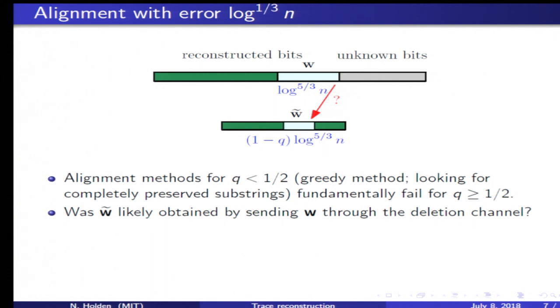In our work, we introduce a completely new alignment method. The alignment method is based on a test. Our test takes two strings, W tilde and W, as input, and it says whether W tilde is likely to have been obtained by sending W through the deletion channel.